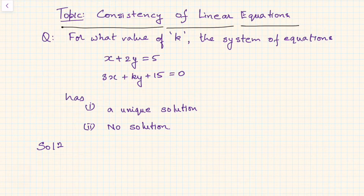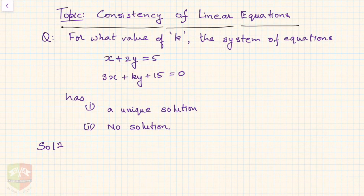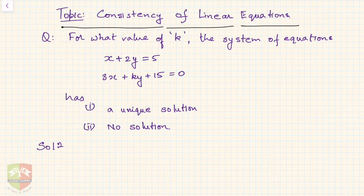This question is about consistency of linear equations. The question says: for what value of k does the system of equations x plus 2y equals 5, and 3x plus ky plus 15 equals 0 have — one, a unique solution, and two, no solution? Before attempting this, let us do a quick recap of consistency of linear equations.